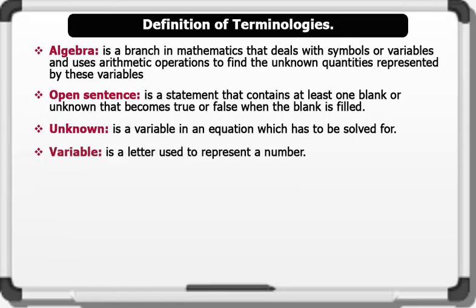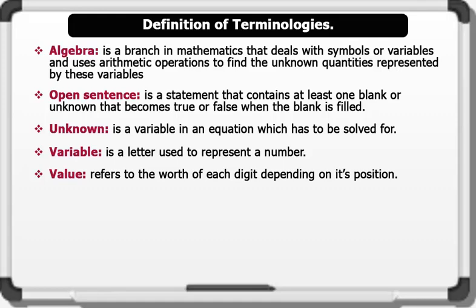A variable is a letter used to represent a number. Value refers to the worth of each digit depending on its position in the number.